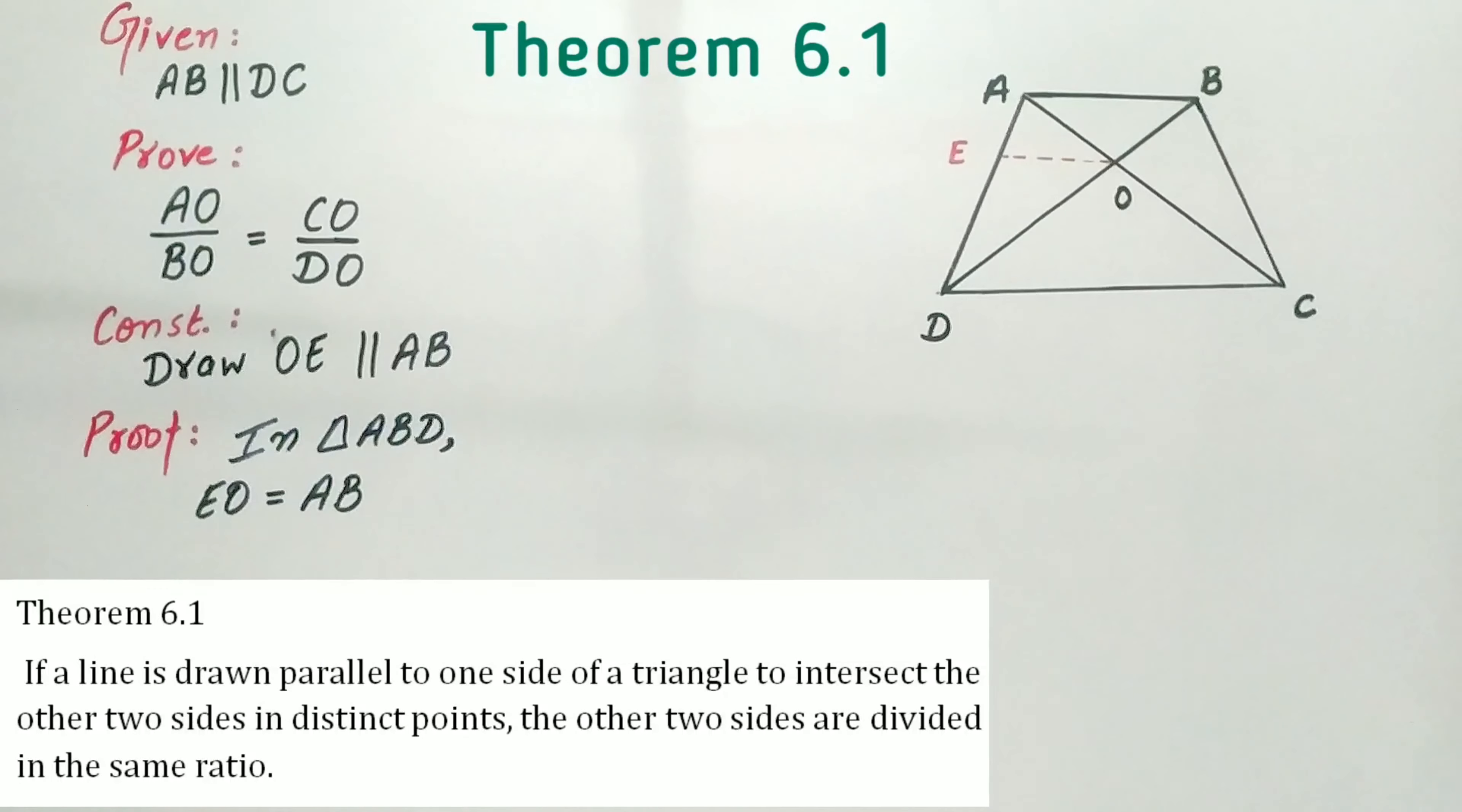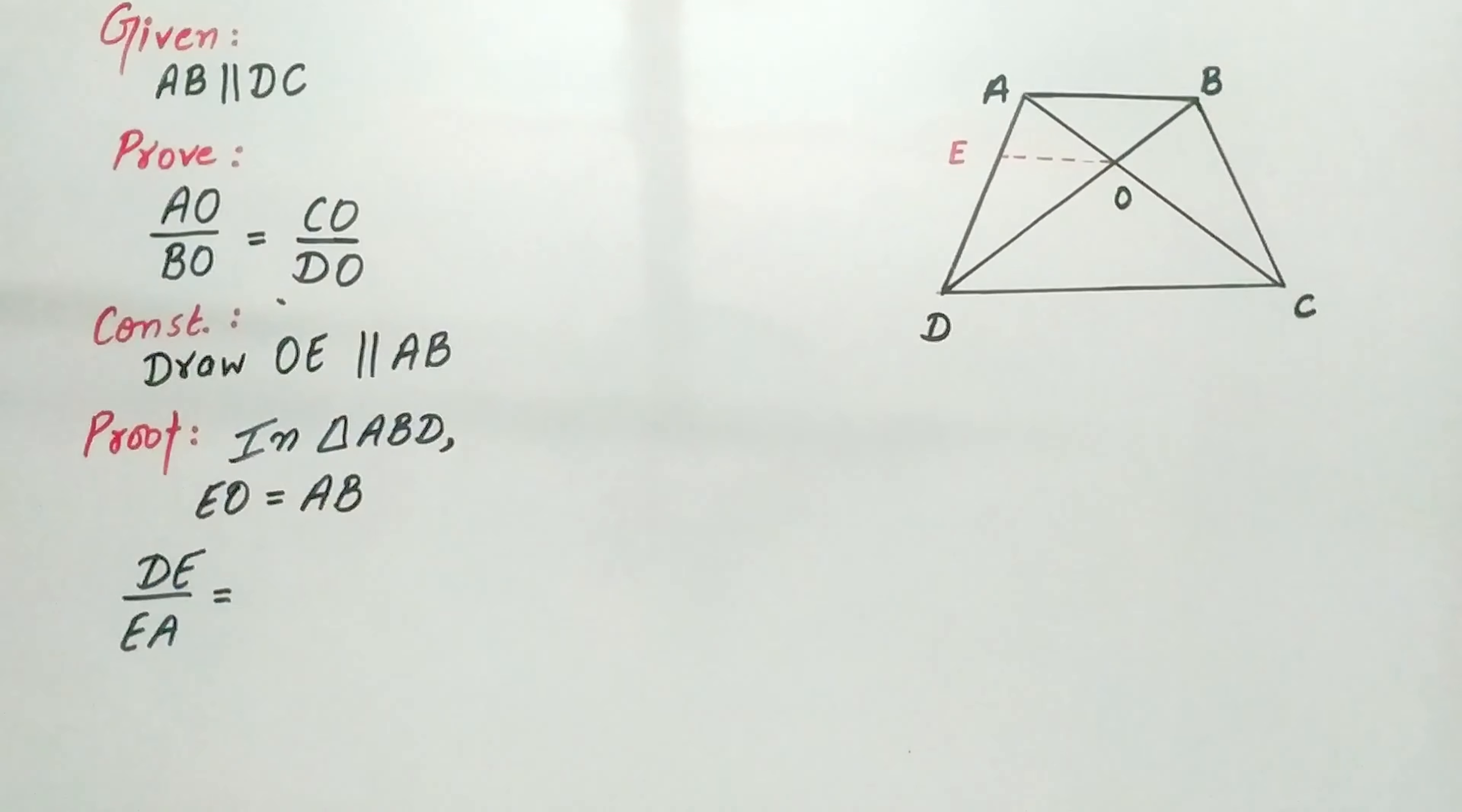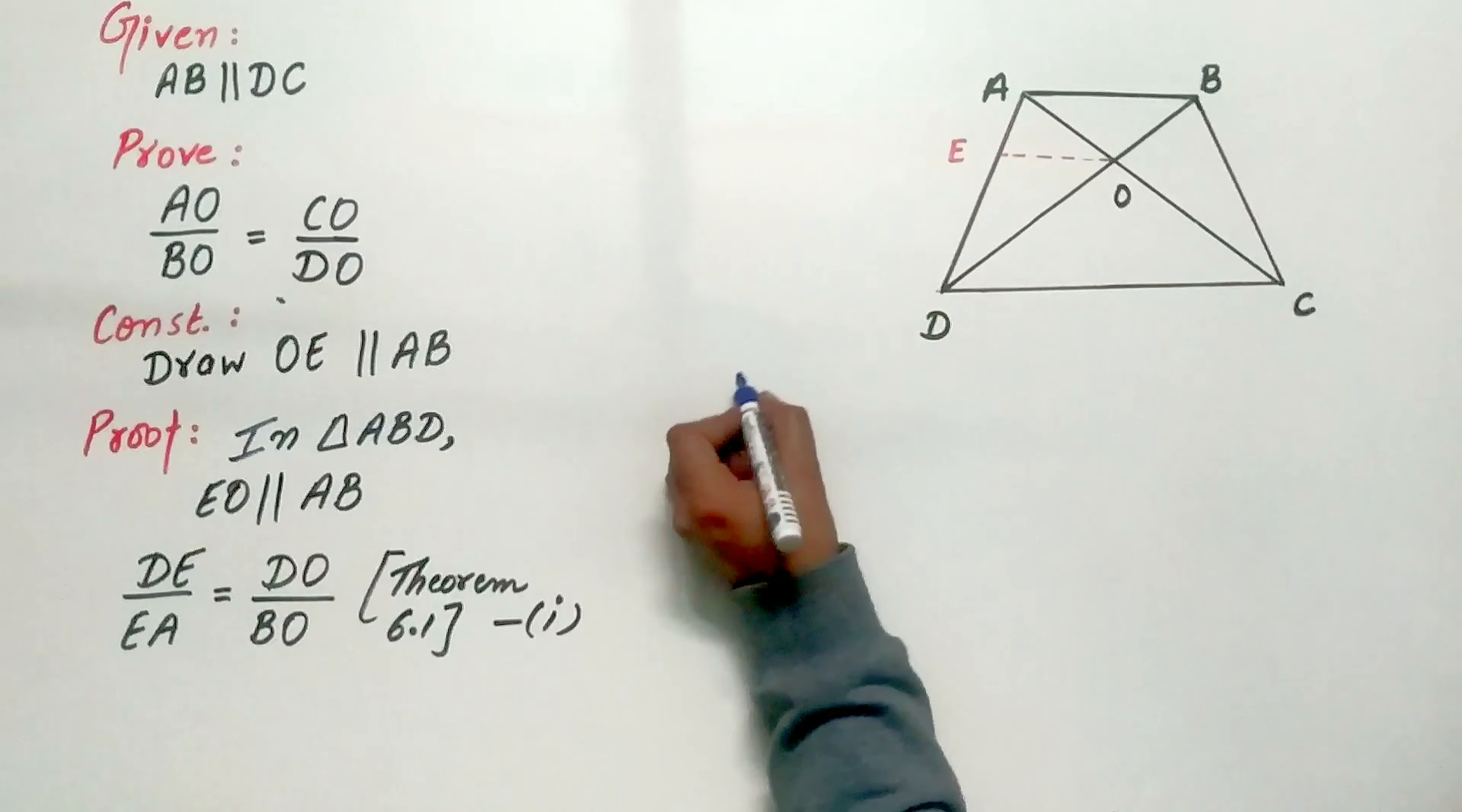By theorem 6.1, DE by EA is equal to DO by BO.